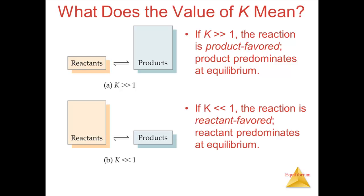On the other hand, if the value of K is much less than 1, the implication is that, once equilibrium is reached, we have mostly reactants present. A value for K much smaller than 1 — again smaller by at least a factor of 100 — means that the denominator, the concentrations of the reactants, is much greater than the numerator, the concentrations of the products. So the reactants predominate.